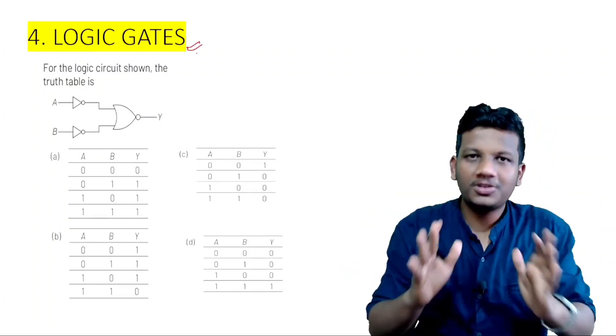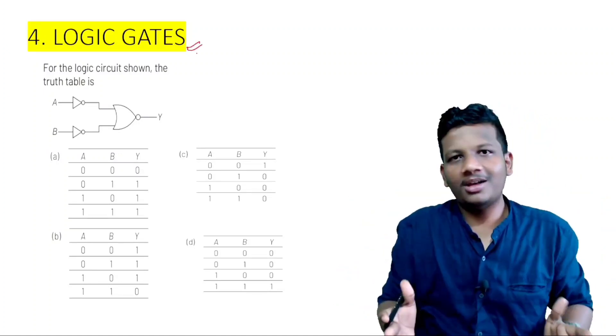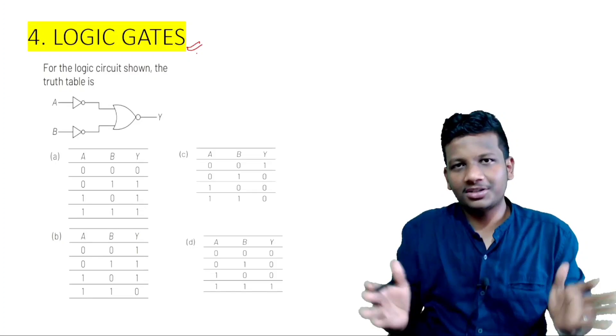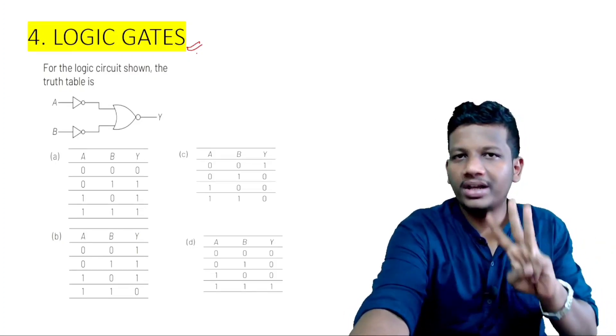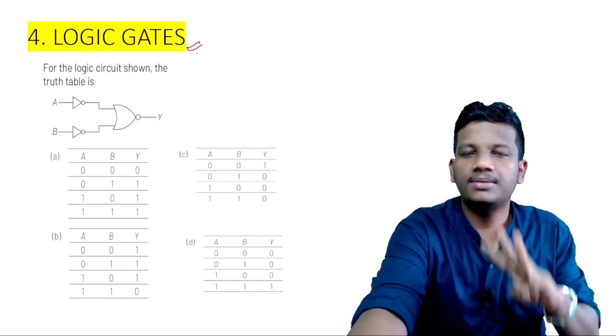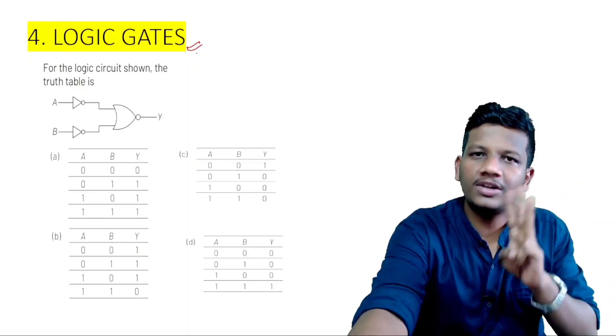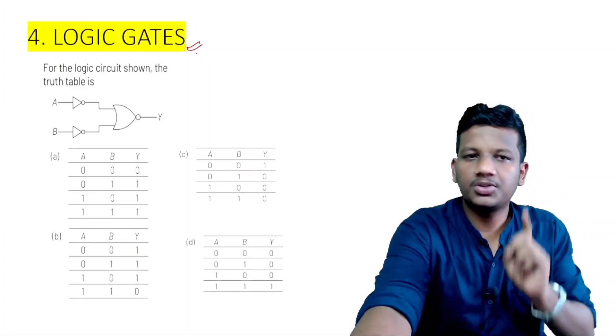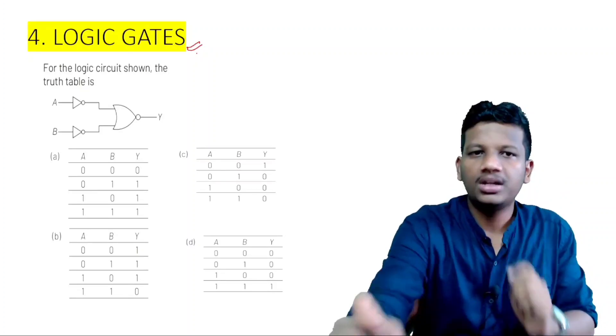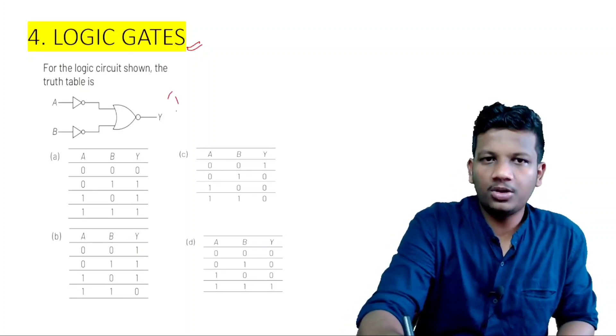The next question is logic gates. Why do we have 3 models in safety? Because there are 3 different models in the NTA paper. This is number 1 — the first model. This is the second model. This is the third model. So we have 3 models.